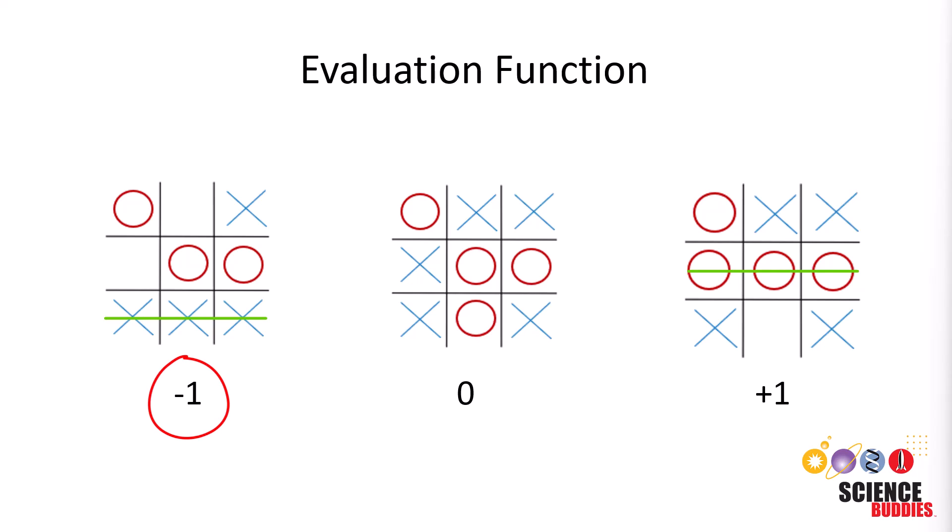Conversely, a negative score signals an advantage for player X, a path that might lead to victory for the opponent. A neutral score of zero is given when neither player wins and the game ends in a draw. The evaluation function acts as a guide for the algorithm to choose the most favorable outcome for the player it's representing.